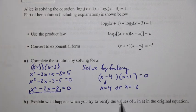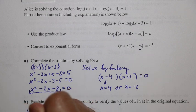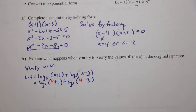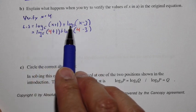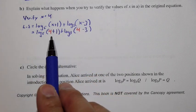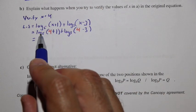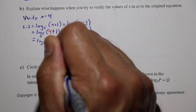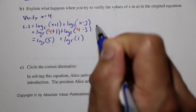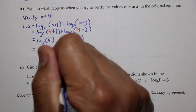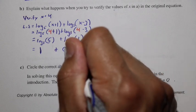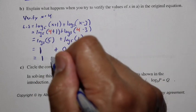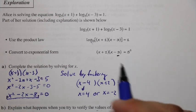We need to verify these values because we're not sure they're correct. Verifying x equals 4: the left side is log base 5 of (4 plus 1) plus log base 5 of (4 minus 3), which is log base 5 of 5 plus log base 5 of 1. Log base 5 of 5 equals 1, and log base 5 of 1 equals 0. That gives 1, which equals the right side.